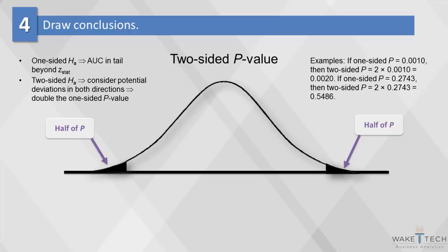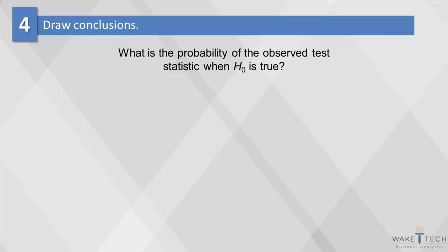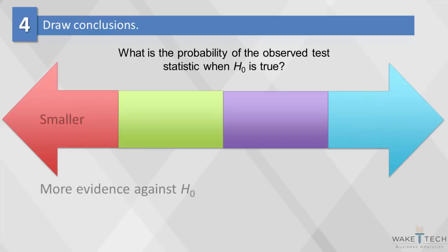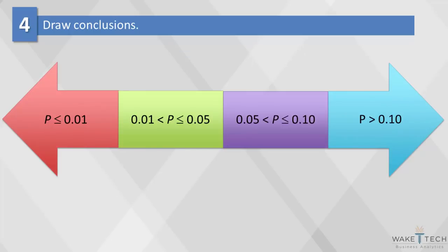Since we will be using p-values in all our subsequent analysis, it's worth emphasizing what that means. P-values ask the question: what is the probability of the observed test statistic when H0 is true? Remember, the smaller the p-value, the more likely that your null hypothesis is not true. This graphic depicts the significance of p-values at less than 1%, between 1 and 5%, between 5 and 10%, and greater than 10%. These are common significance levels; 5% is the most common cutoff.